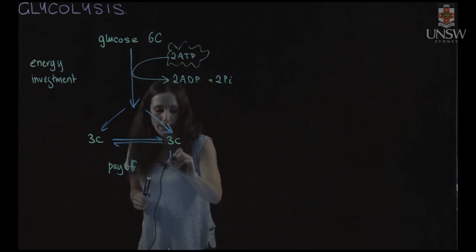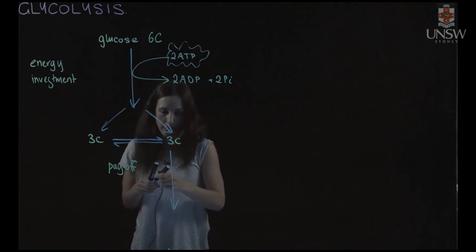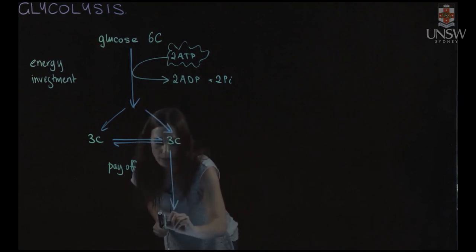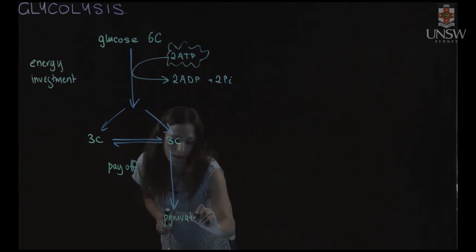As we go through the rest of the steps of glycolysis what we end up with is pyruvate. And pyruvate is another three carbon molecule.